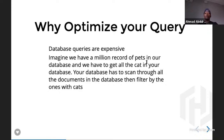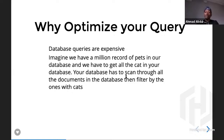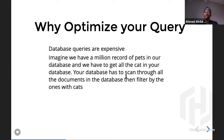The first question is: why optimize your query? Database queries are actually very, very expensive. Imagine you have a record of millions of pets in your database and you're trying to query the database to get a particular category of cats. Your database has to scan through each record one by one before categorizing them. In MongoDB, we call this a collection scan.